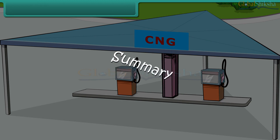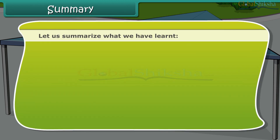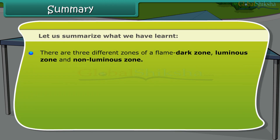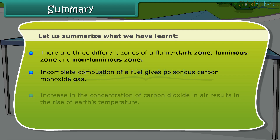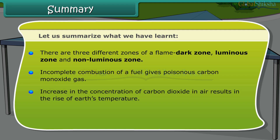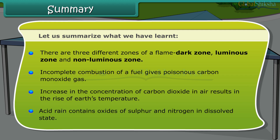Summary. Let us summarize what we have learned. There are three different zones of a flame: dark zone, luminous zone, and non-luminous zone. Incomplete combustion of a fuel gives poisonous carbon monoxide gas. Increase in the concentration of carbon dioxide in air results in the rise of Earth's temperature. Acid rain contains oxides of sulfur and nitrogen in dissolved state.